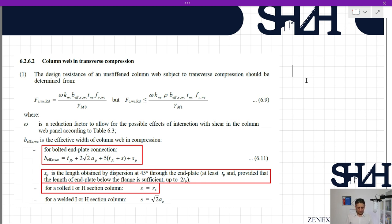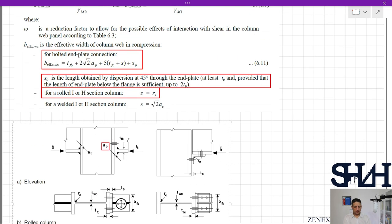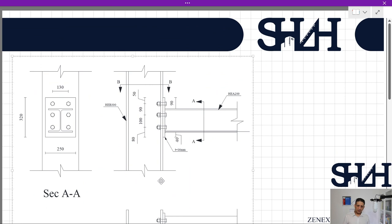Coming back to the equation, √2 × a = √2 × ap is the leg size of the weld. Here we have 8 millimeters. sp is taken as tp if we have sufficient length below the flange. Coming back to our sketch, we can see that we have 40 millimeters, which is greater than 2×16, so we have enough space. As a result, sp can be taken as tp, which is 16 millimeters.